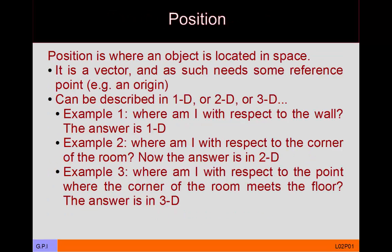Let's look at each of these terms in more depth. Starting with the vector term for position: position is basically the location of an object in space. It is specified with respect to some reference point, commonly called the origin. The origin is usually determined based on where the reference point for this motion is — it might be the point at which the motion begins.